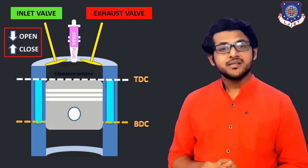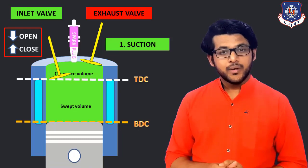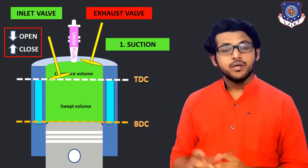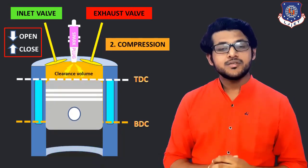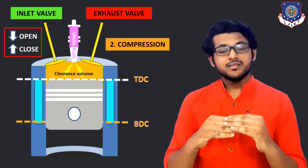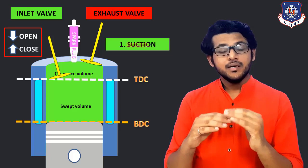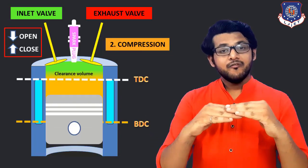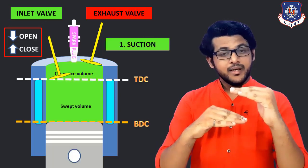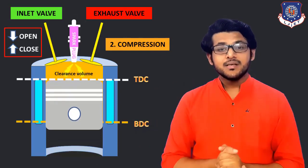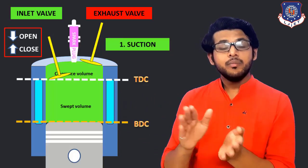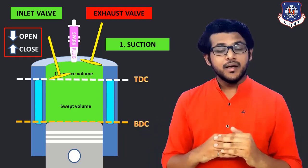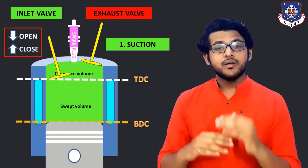This is the first stroke in which the piston is moving from top to bottom and the inlet valve is open. Now see the second stroke — in this stroke the piston is moving from BDC to TDC, it is the compression stroke. When the piston is moving upwards and leaving BDC, the inlet valve is actually still open. When it moves slightly upwards, it will start closing, and after the piston leaves BDC, it will close.